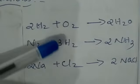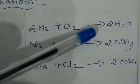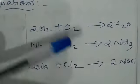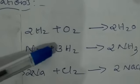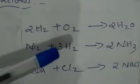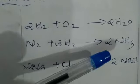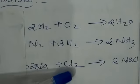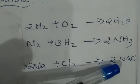On the left hand side we write the reactants with a plus mark between the elements, and on the right hand side after the arrow mark we write the products. In the second equation, nitrogen and hydrogen are the reactants and NH₃ is the product. In the third equation, sodium and chlorine are the reactants and the product is NaCl.